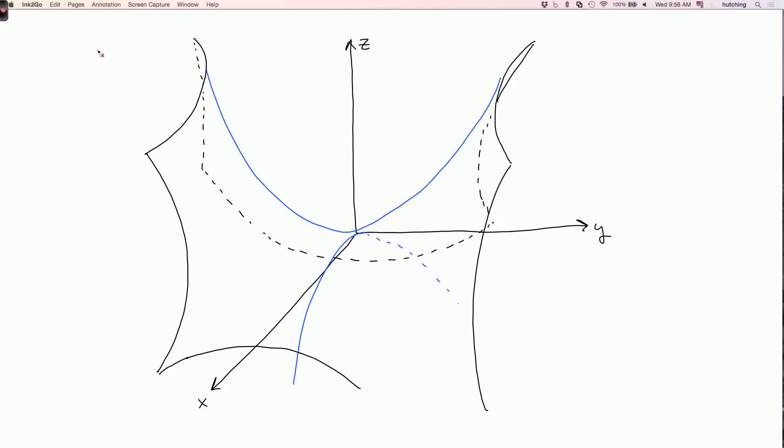We can also look at the intersection with the xy plane. So remember, we calculated that it's two lines. So it looks surprising that this curved surface is going to give you straight lines, but it really does. And these lines are here. So that's the intersection with the xy plane.